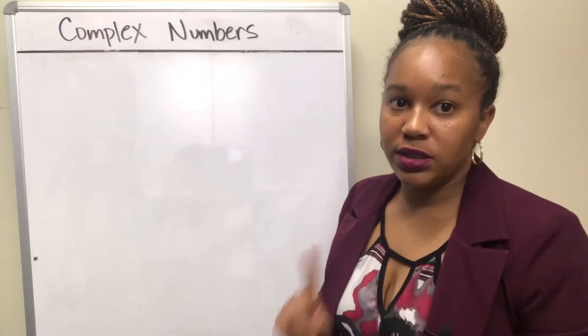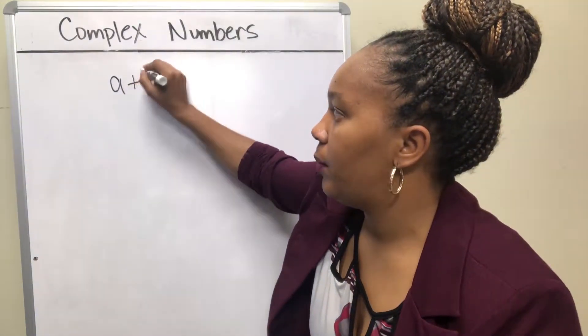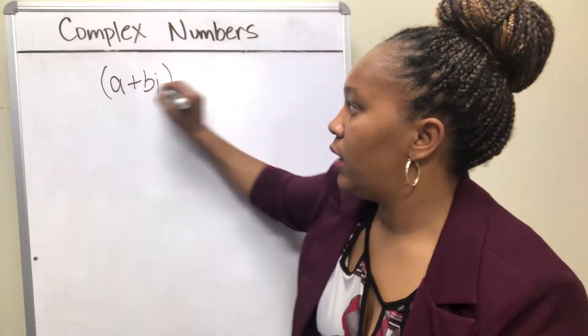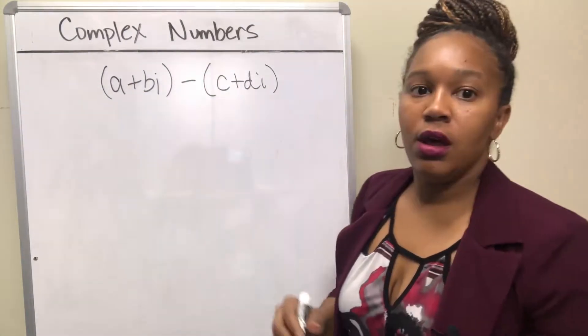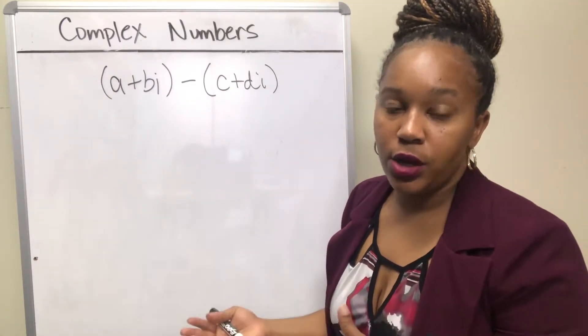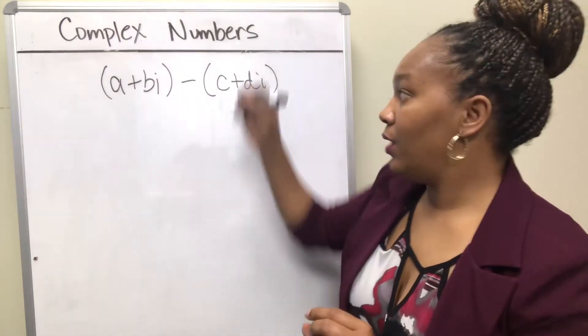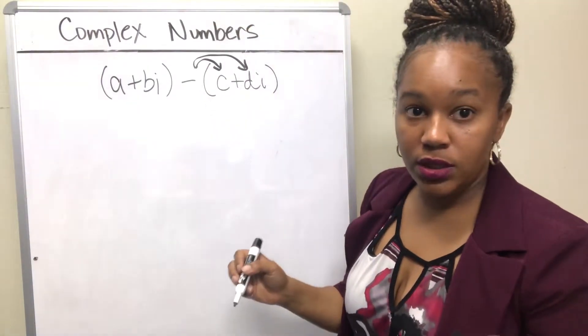Subtraction works very similar except there's only one thing that's different. If I take two generic complex numbers and I want to subtract them, then one way to do it is you can think of subtracting the real parts and subtracting the imaginary parts, or you can think about distributing this negative. Either way you do it, you get the same answer.